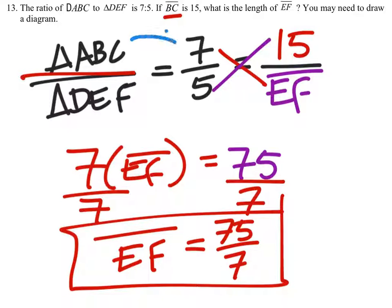Triangle ABC is in the same position as the 7 in the ratio that it gave us. So triangle DEF is in the same position as the 5, so we know that triangle DEF is smaller.